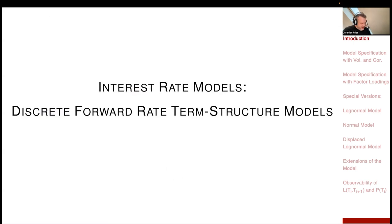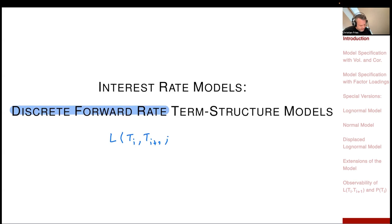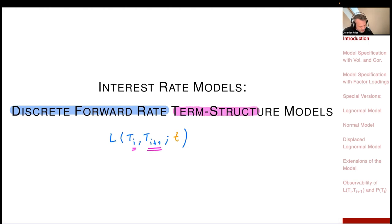I would like to model the forward rate here. For historic reasons, I call my discrete forward rate L — historically associated with LIBOR, but it is just the simple forward rate. So it is L from Ti to Ti+1, the forward rate for that period, observed at some observation time little t. It is a stochastic process, and I have many stochastic processes because I have many periods, so I will have a model for the whole term structure.